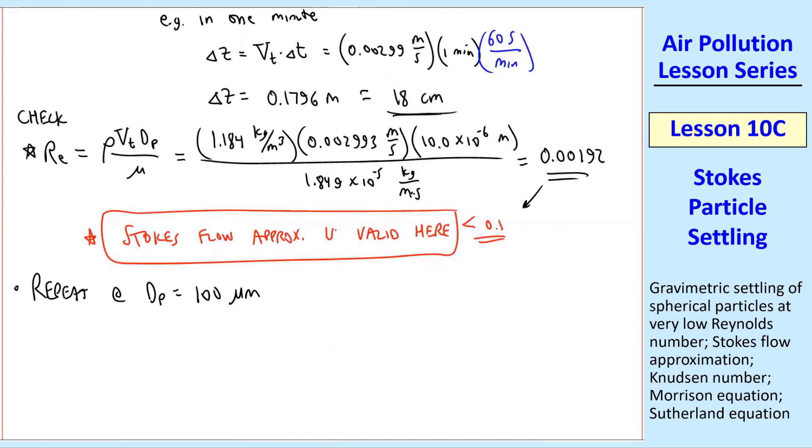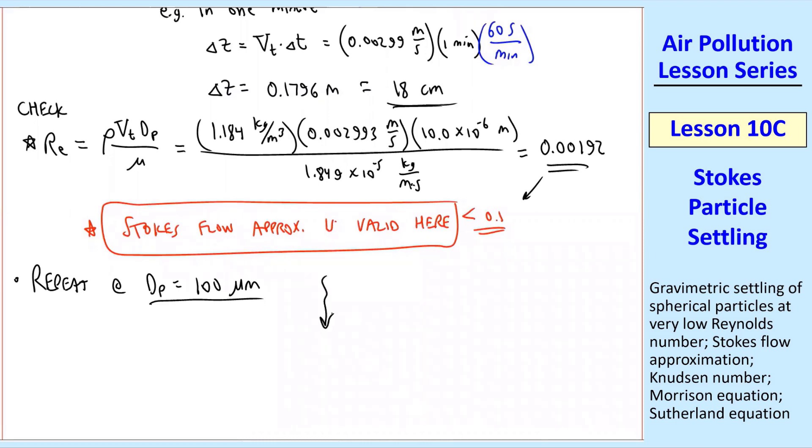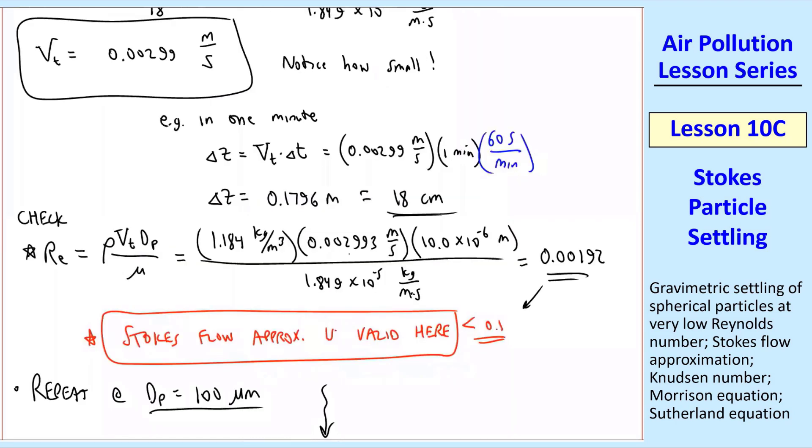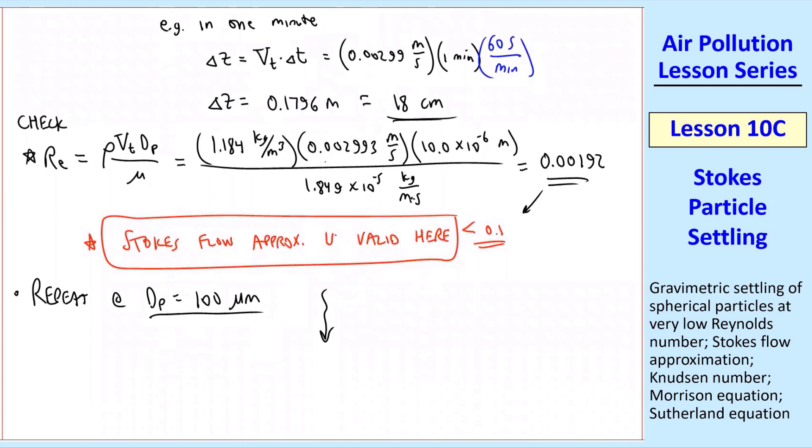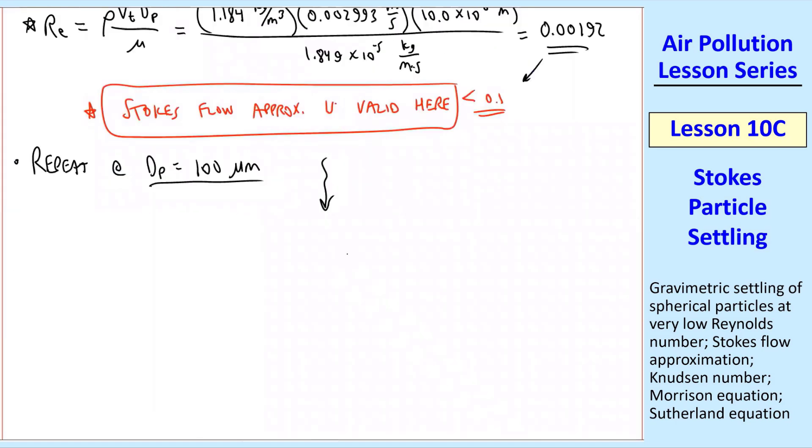Now suppose we have a much bigger particle now, 100 microns. I'm not going to go through all the math again. Just plug in 100 microns instead of 10. You'll have a different Cunningham correction factor and obviously different Reynolds numbers and VTs.